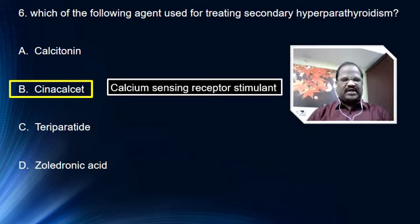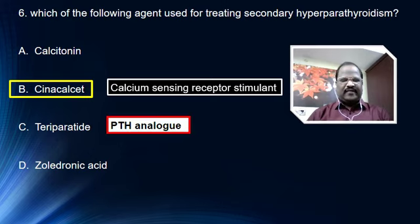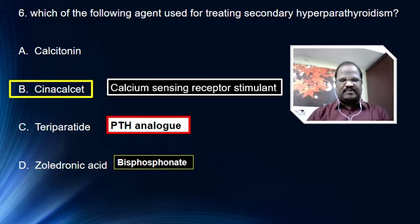The remaining options: calcitonin is a hypocalcemic hormone, teriparatide is a parathormone analog, and zoledronic acid is a bisphosphonate.